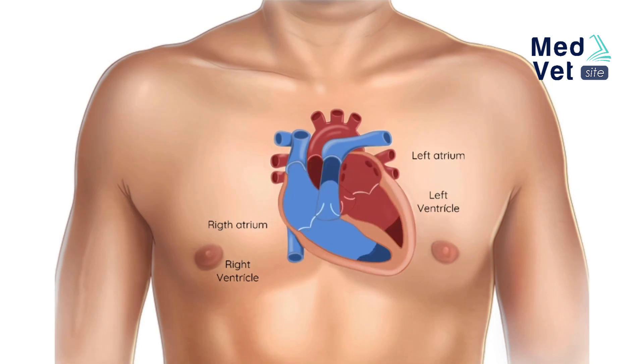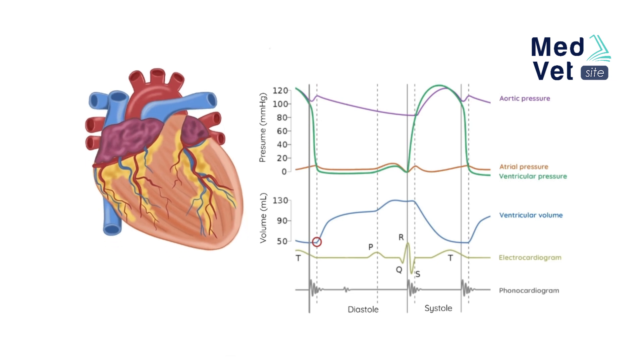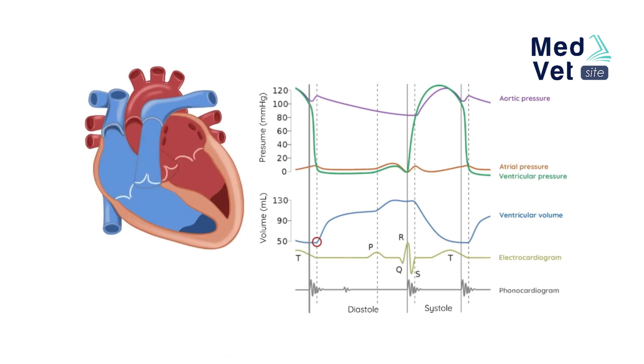For practical purposes, we are going to explain this cycle in the left cavities. In the left ventricle, there is a residual volume of approximately 50 milliliters of blood from the previous cardiac cycle and has a pressure of 2 to 3 millimeters of mercury.